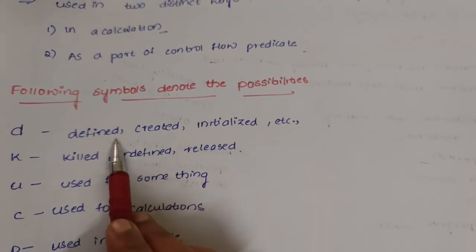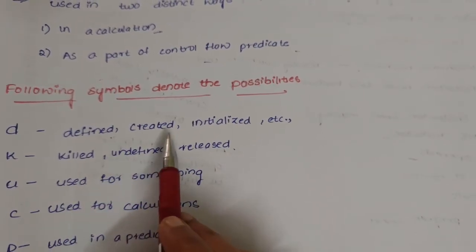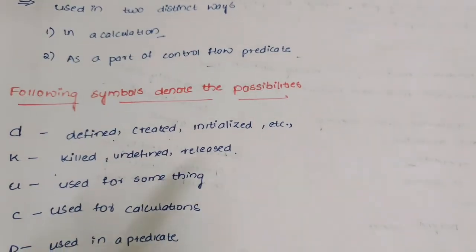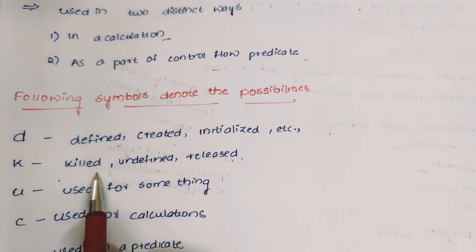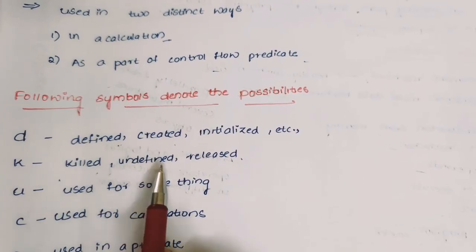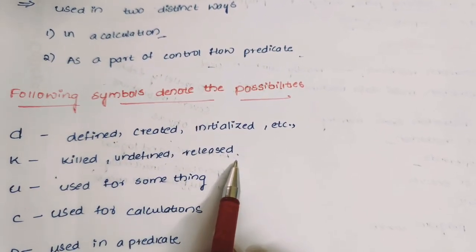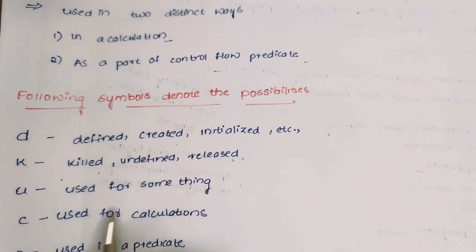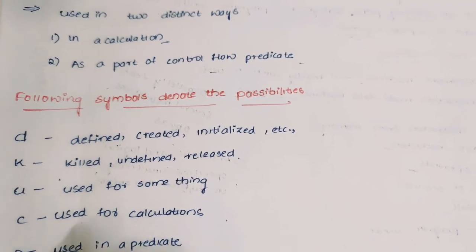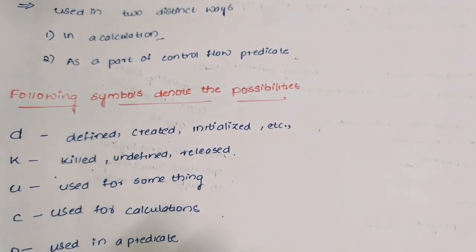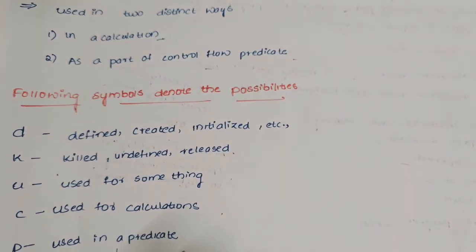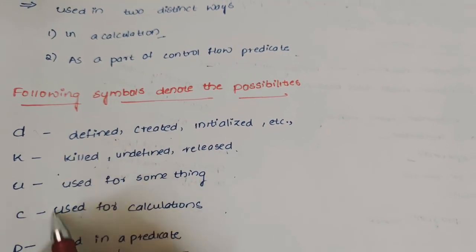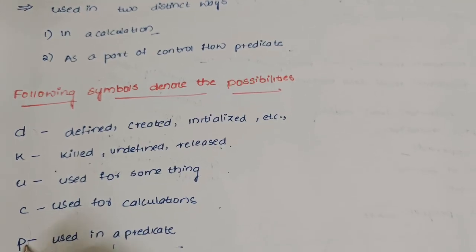D for defined, created, initialized, etc. K is used for killed, undefined, or released. U is used for something else. C for calculations, and P is used to define a predicate. In the control flow graph, whatever path we are choosing, these symbols must be denoted.